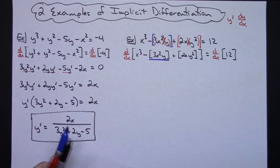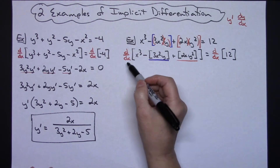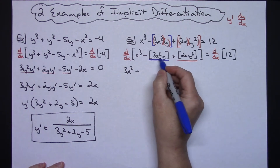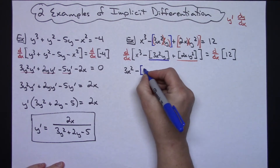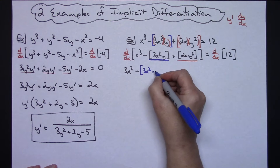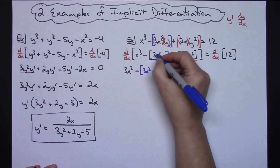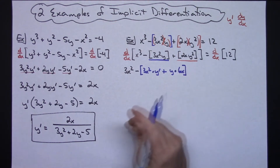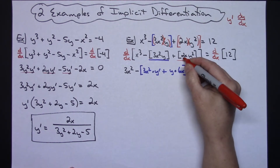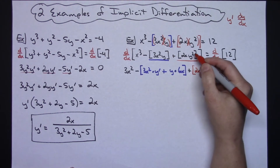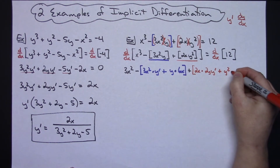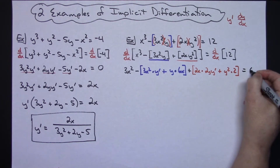I'll color code: the first product rule in blue, the second in red. The derivative of x³ is 3x². Then minus — blue product rule — first term 3x² times the derivative of y, which is y prime, plus the second term y times the derivative of 3x², which is 6x. Then plus — red product rule — first term 2x times derivative of y², giving 2y·y′, plus y² times the derivative of 2x, which is 2. That all equals zero.